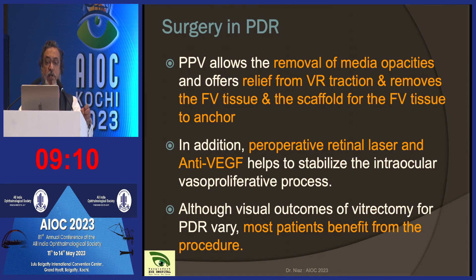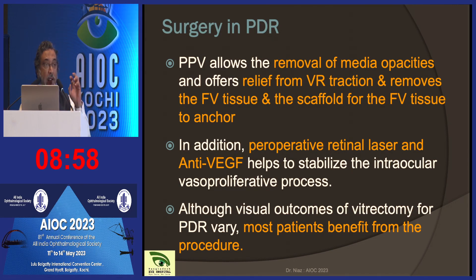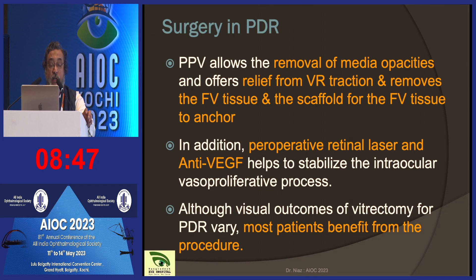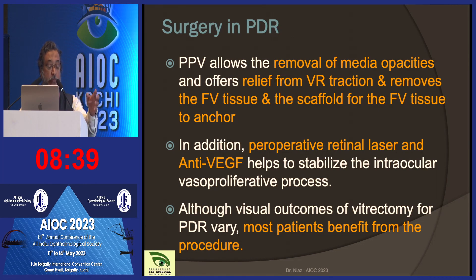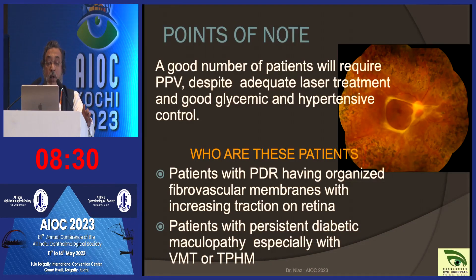If the posterior hyaloid is removed and the vitrectomy is complete, the eye is safe and does not progress to blindness. Pre-operatively, giving PRP laser or anti-VEGF stabilizes the eye in the vasoproliferative process. Although visual outcomes vary, most patients benefit from this procedure. One important point: sometimes we think that after adequate PRP the eye is safe, but actually many patients will eventually progress to further proliferative stages despite adequate laser treatment.